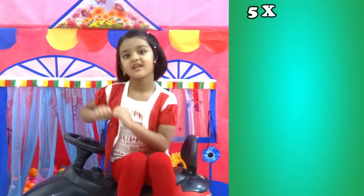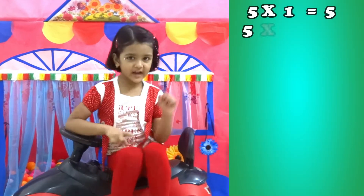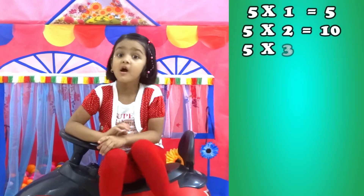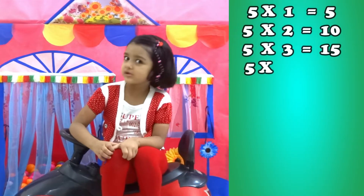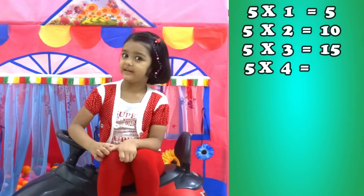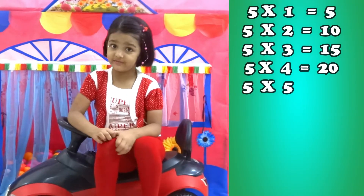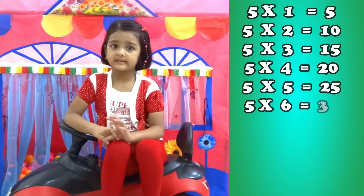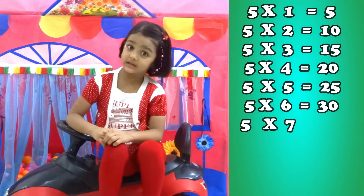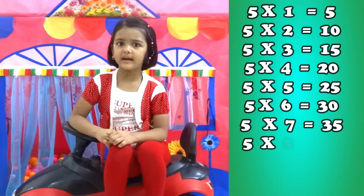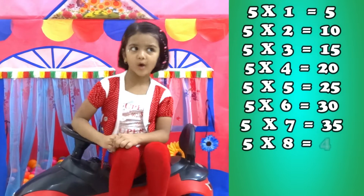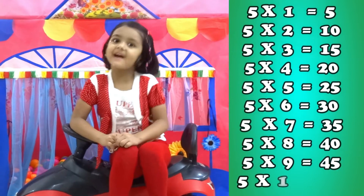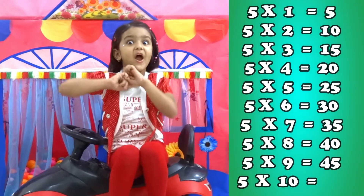5 one's are 5, 5 two's are 8, 5 three's are 50, 5 four's are 20, 5 five's are 21, 5 six's are 30, 5 seven's are 35, 5 eight's are 40, 5 nine's are 45, 5 ten's are 30.